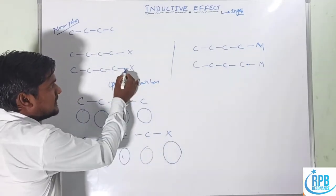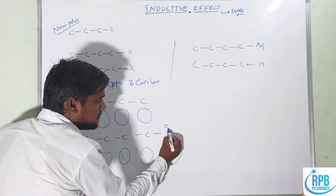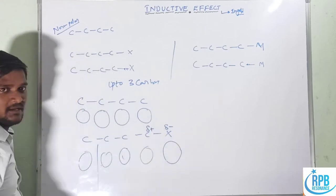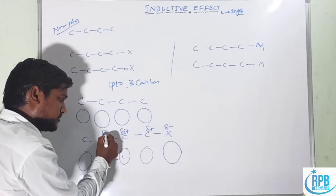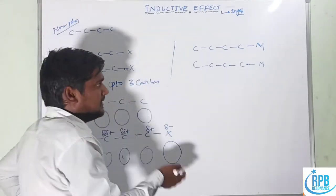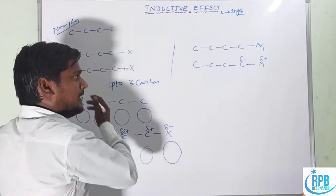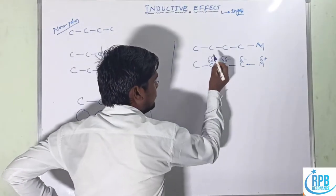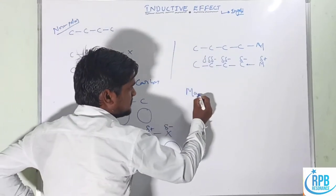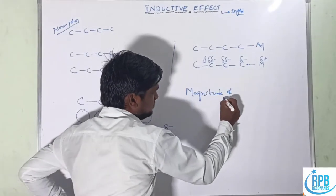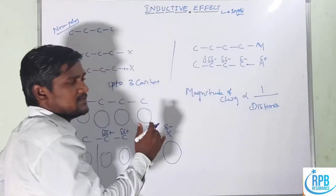The more electronegative atom causes two electrons to shift towards the halogen atom, which then becomes partially negative. The adjacent carbon becomes partially positive. Moving along the carbon chain, the positive character decreases. The magnitude of the charge is inversely proportional to the distance — if distance increases, the magnitude of the charge decreases.